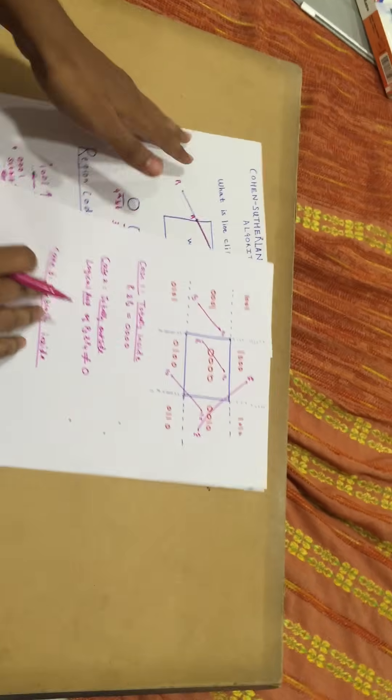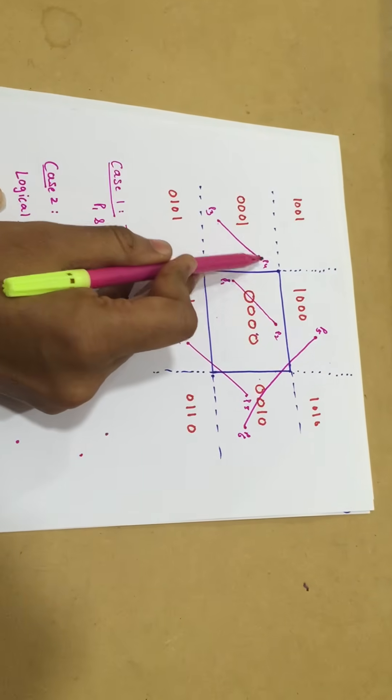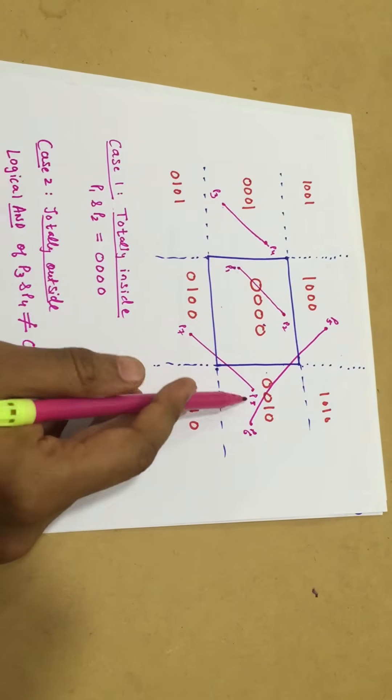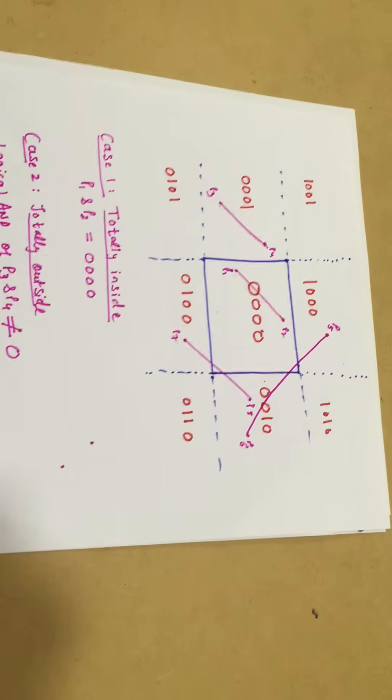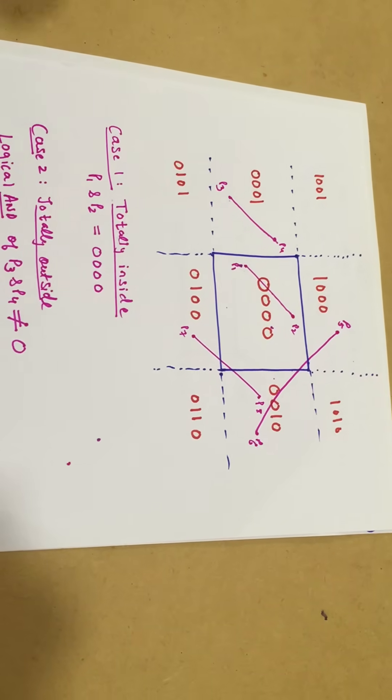Suppose we're given these lines P1, P2, P3, P4, P5, P6, P7, P8 which are to be clipped. There are 3 total possible cases.